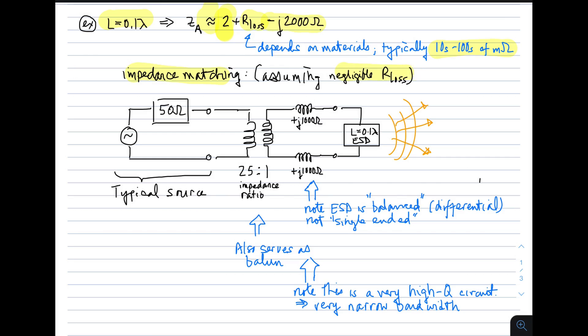Let's just ignore the loss resistance here for a moment, which is conceivable. We could use a metal which is of such high conductivity that the loss resistance is not significant, at least relative to the radiation resistance. In that case, the antenna impedance will be two minus J two thousand ohms. So over here we have that. We have two minus J two thousand ohms.